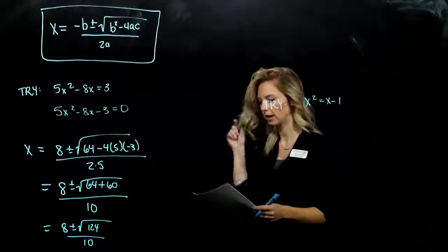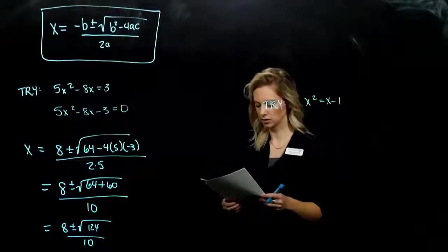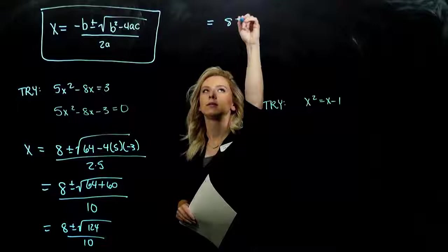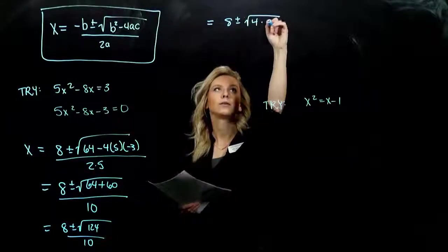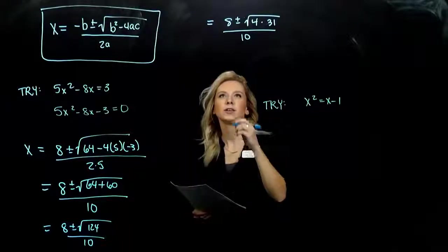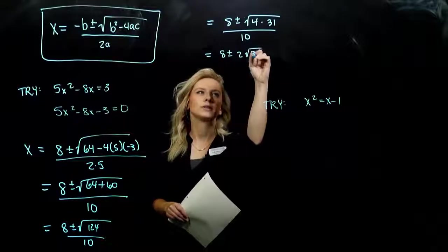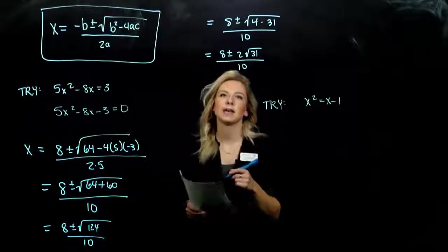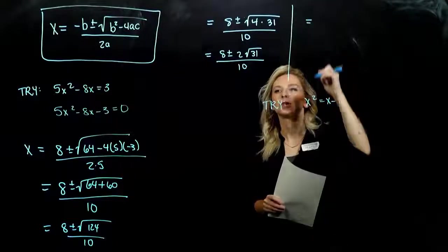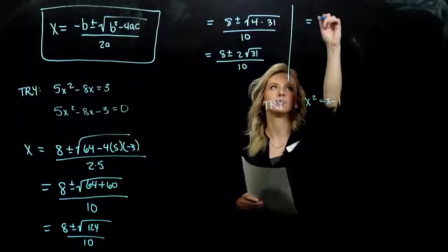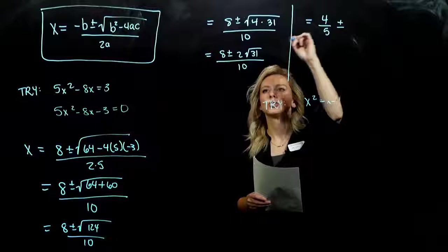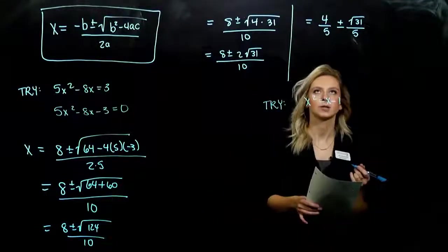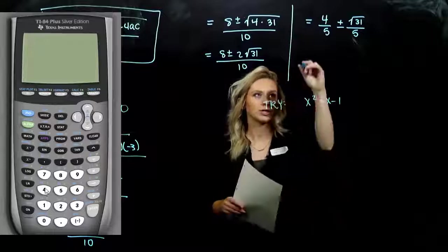And can we simplify that? How can I break up 124 into a perfect square and something else? It's even, so the first one that I should try is 4. And we can indeed. I can break it up into 4 and 31, all over 10. So evaluating out of there, I've got 8 plus or minus 2 times the square root of 31 all over 10. So as we simplify, I've got 8 over 10, which will give me out 8 divided by 10 simplifies down to 4 fifths. So plus or minus 2 over 10 is 1 fifth. So I have square root 31 over 5. So we have those common denominators. We could combine them together if we wanted to.